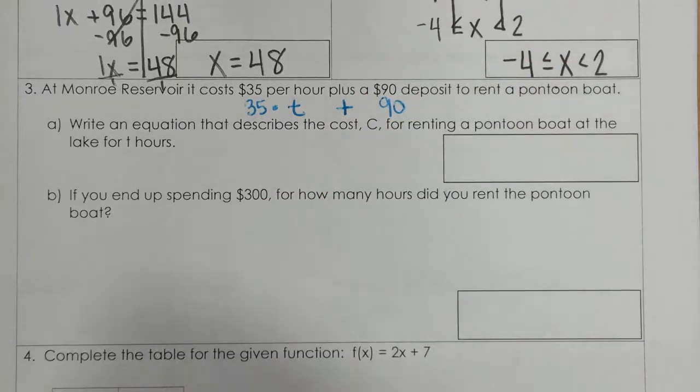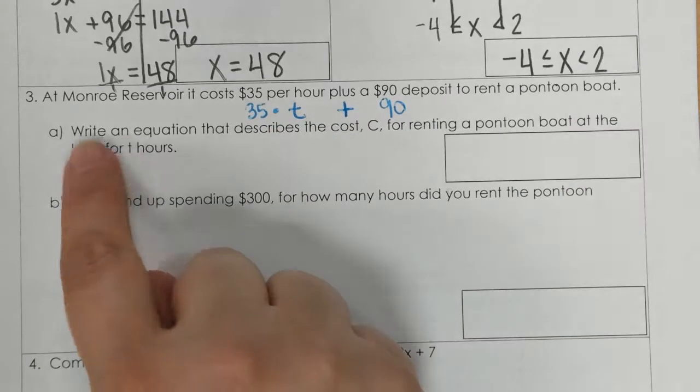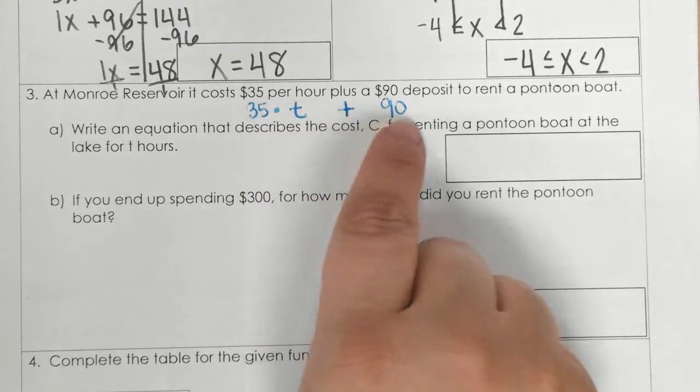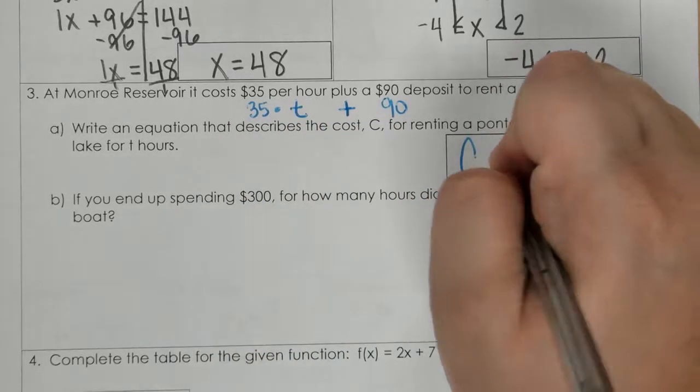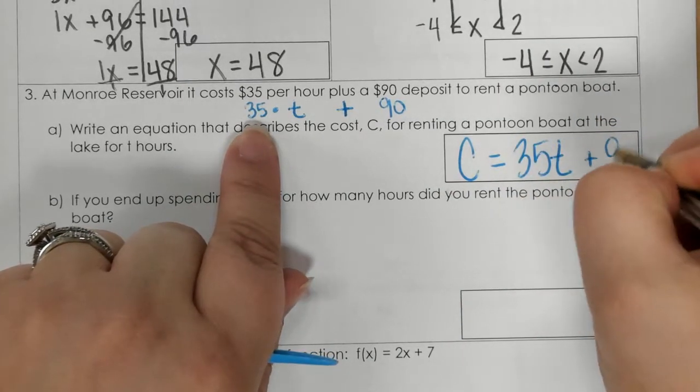plus sign the 90. Okay, so that's part of your expression in your equation. It says write an equation that describes the cost C. So, all of that equals C. So, C equals 35t plus 90.